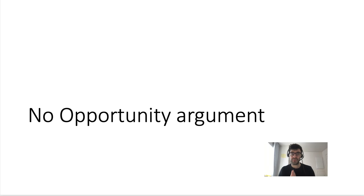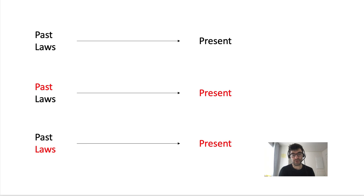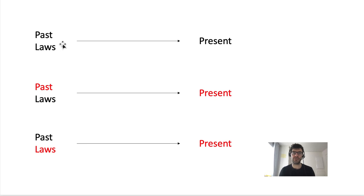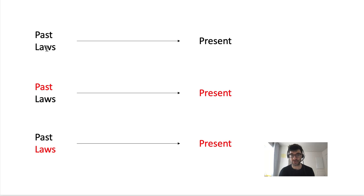We now have all the pieces to appreciate Franklin's no-opportunity argument. But first, a brief review of determinism. If determinism is true, then the actual past together with the actual laws entails all states in the future. Equivalently, any world that has the same past and the same laws as our world is identical to our world at any time. It follows that if our world is deterministic, then any world with a different present must have either a different past or different laws.